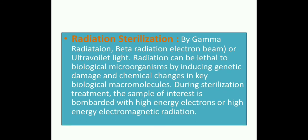The next method under cold sterilization is radiation sterilization, which is used to sterilize materials that cannot withstand higher temperatures. This includes gamma radiation, beta radiation, electron beam, or ultraviolet light. Radiation is lethal to biological microorganisms by inducing genetic damage and chemical changes in key biological macromolecules. During sterilization treatment, the sample is bombarded with high energy electrons and high energy electromagnetic radiations.